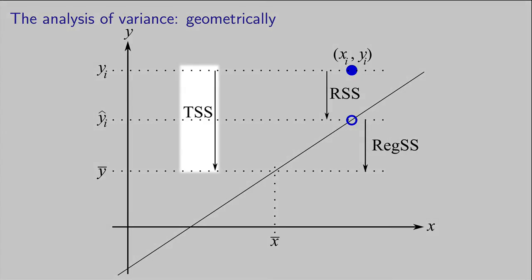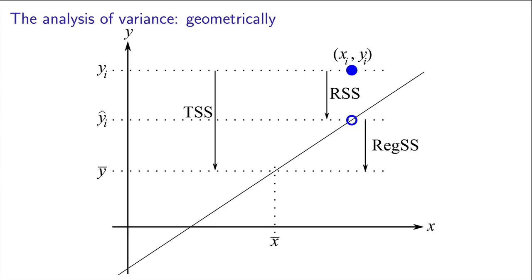The first distance that we will consider is the distance from the data point, yi, to the line, y-bar. We will call that the total sum of squares. You will see why we call it that in a minute. The distance from the data point to the base case.